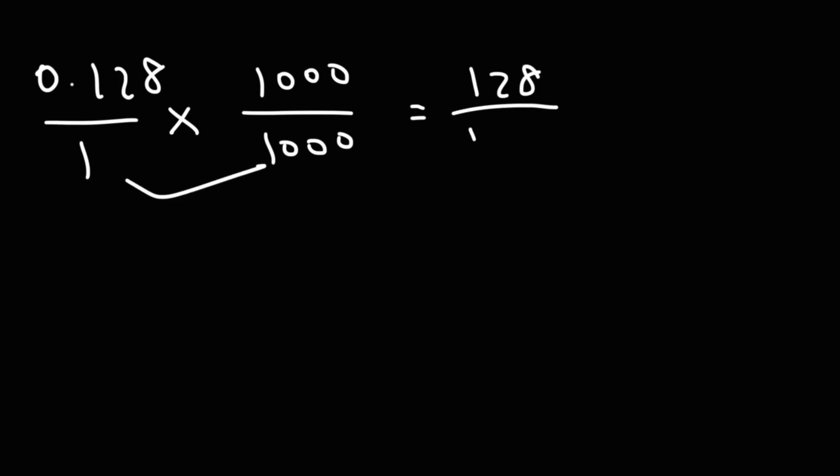Now, what about this example, 0.128? Notice that we have three numbers to the right of the decimal. So, because it goes to the thousandths place, we're going to put it over 1 and multiply the top and bottom by 1,000. So, if we move this three decimal points to the right, we get that 0.128 times 1,000 is 128. And 1 times 1,000 is 1,000.